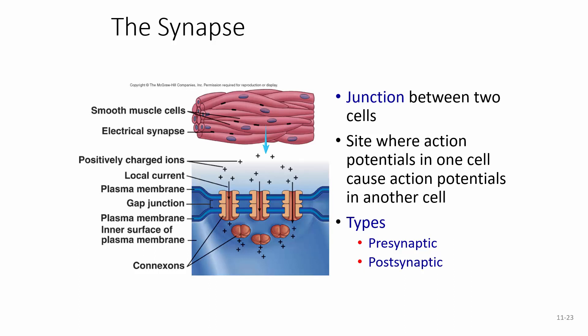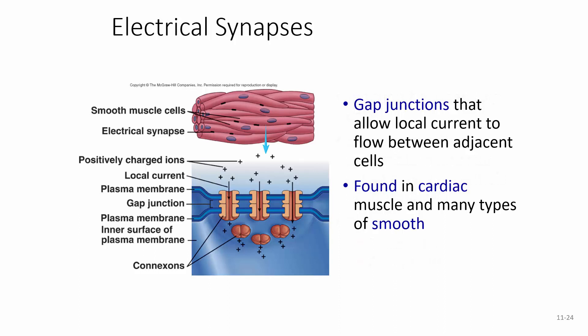The synapse is the junction between two cells and is the site where action potentials in one cell propagate an action potential in another. There are pre-synaptic and post-synaptic synapses. In an electrical synapse, gap junctions allow current to flow between adjacent cells — found in cardiac muscle and many types of smooth muscle, because these cells must coordinate and contract in unison, communicating directly through gap junctions.